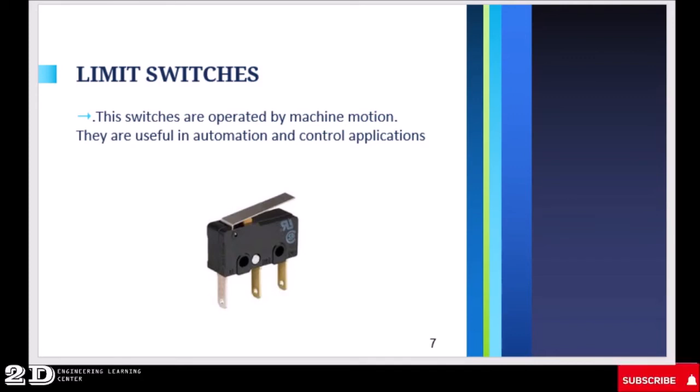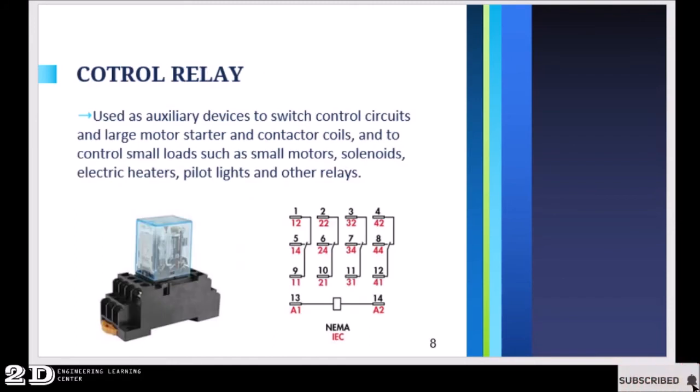Then we have a control relay. A control relay is an auxiliary device to switch control circuits and large motor starters and contactor coils and to control small loads such as small motors, solenoids, electric heaters, pilot lights, and other relays. Basically, a control relay is a contactor which operates at lower output voltage.